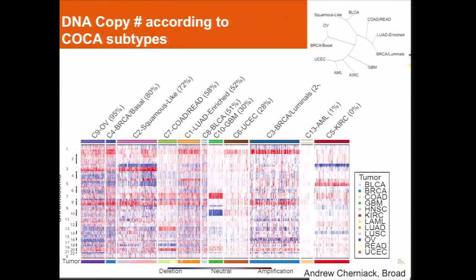Andy Cherniak derived a copy number map that has now been ordered by the COCA subtypes, and you can see clear, distinct copy number patterns that define these tumor types — especially for the mixed types, we see some good patterns. He was also able to create a new clustering from that copy number map.